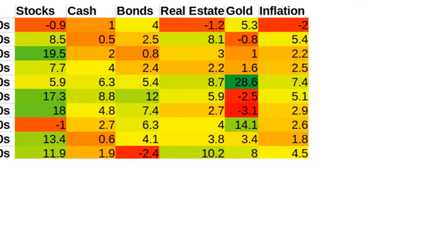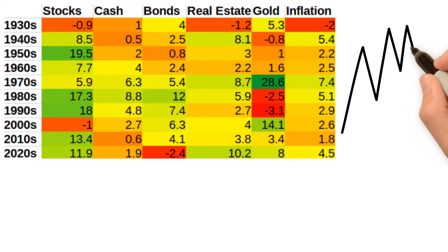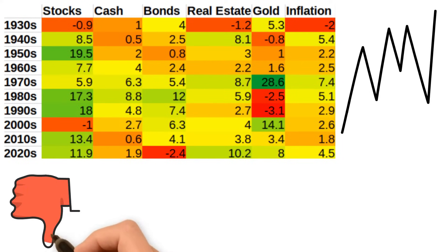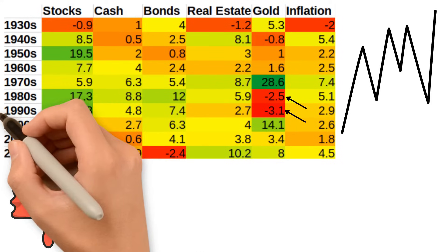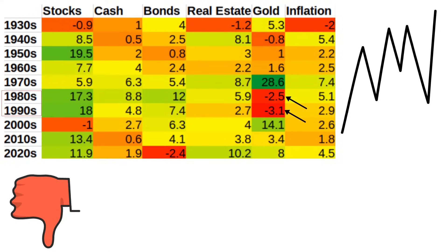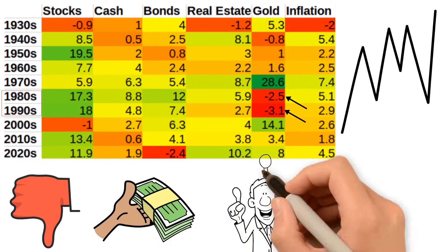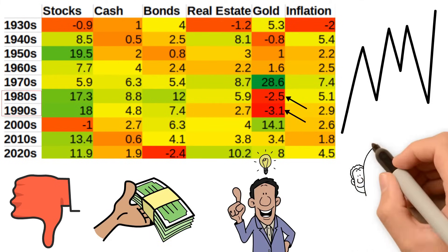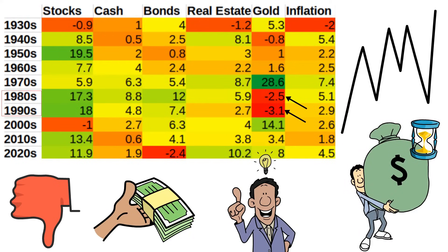First, we look at the different annual returns for each asset class per decade. We see that even by decades, the main asset classes vary a lot in performance. The only asset that showed negative performance over two consecutive decades, which is 20 years, was gold during the 80s and 90s. Perhaps worth noting is that even stocks can go sideways or even negative over a decade. This shows the importance of having a long-term perspective. However, the longer you stay invested, the more likely you are to get the long-term averages.